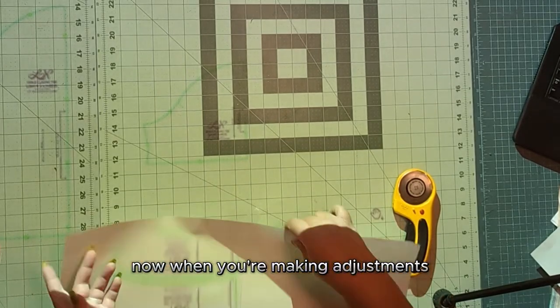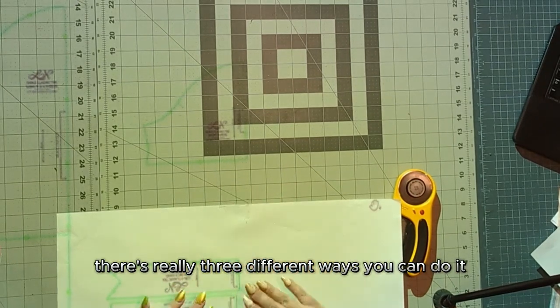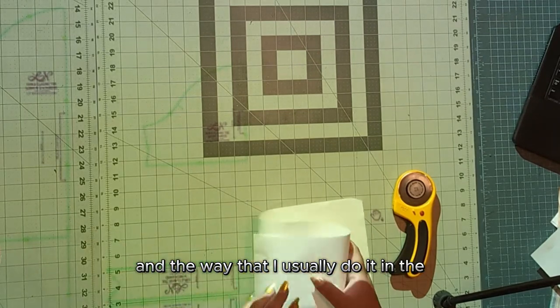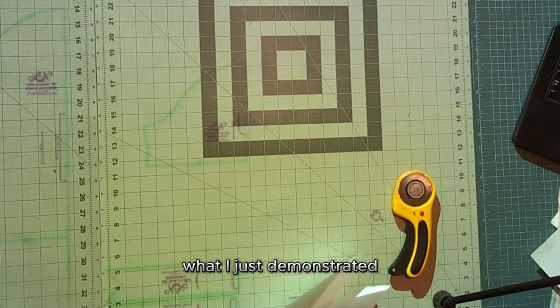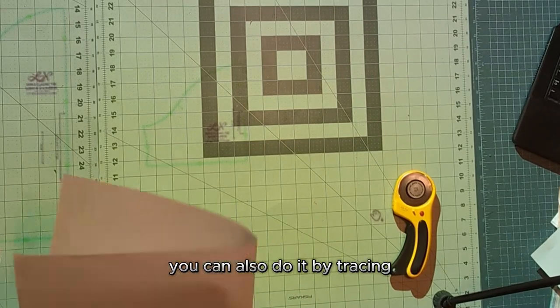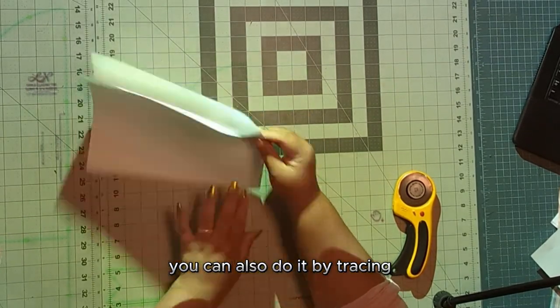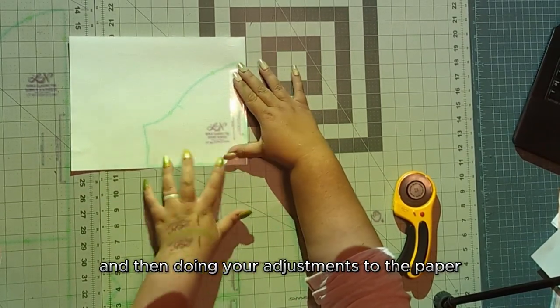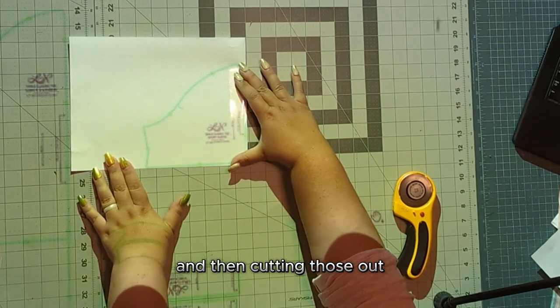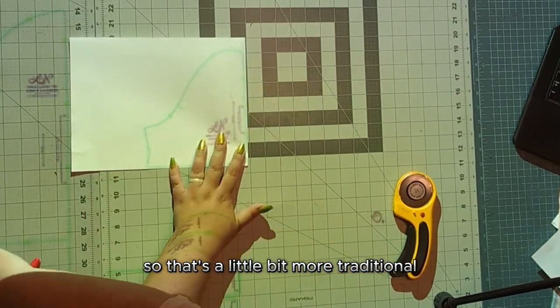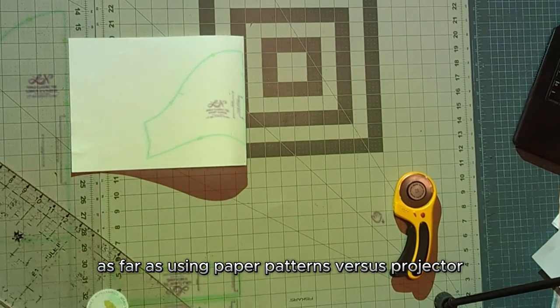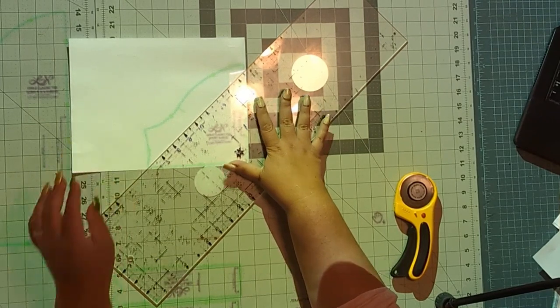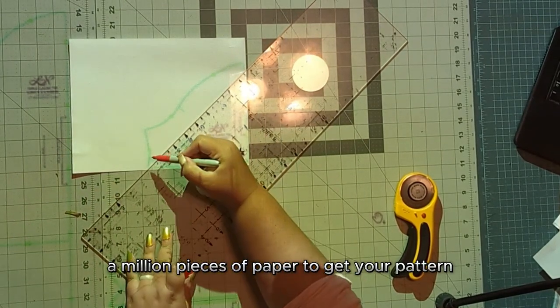And that's basically it for that. Now, when you're making adjustments using your projector, there's really three different ways you can do it. You can do it on the fly, which is my favorite way and the way that I usually do it and what I just demonstrated, but we'll get into that more in a second. You can also do it by tracing your pattern pieces onto paper and then doing your adjustments to the paper and then cutting those out.